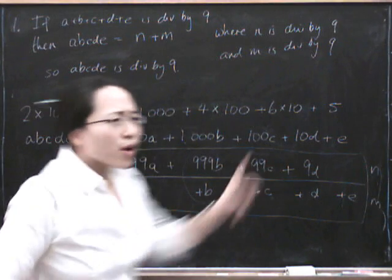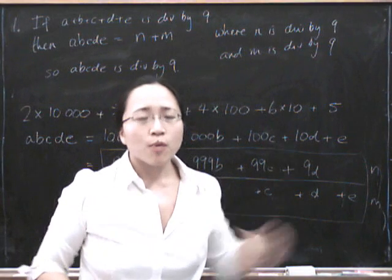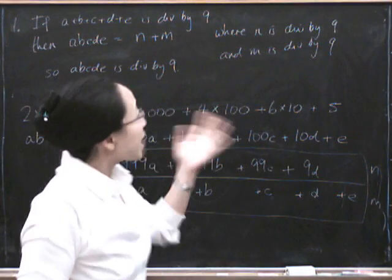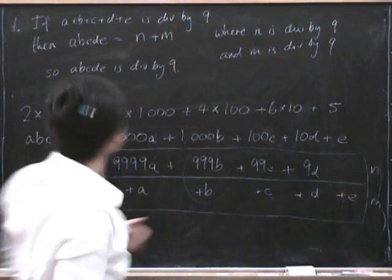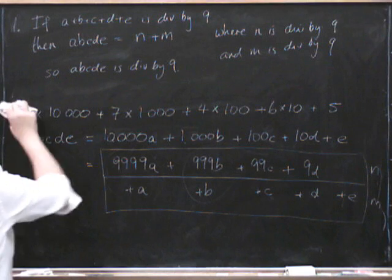Of course, you might wonder why that step is true. And what we're going to do next is we're going to make precise the notion of divisibility so that we can really show that that is true. Now let's try and do the other way around.